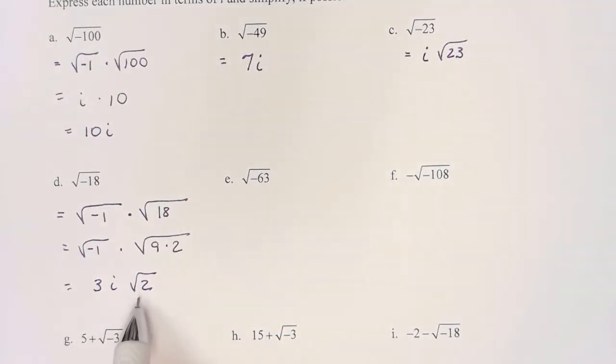Notice how it's written. The radical part, if there's anything left, is put at the tail end. The non-radical value is in the front, and i is just in the middle.